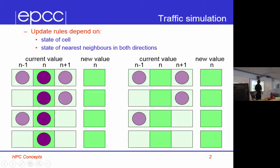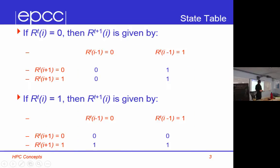You can draw up these truth tables. If the road is 0, then at the next time the road is given by 0 if your downstream neighbour is 0, and 1 if your downstream neighbour is 1 — that's the case where you're empty and somebody moves in.